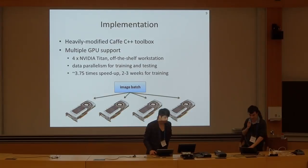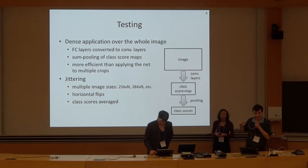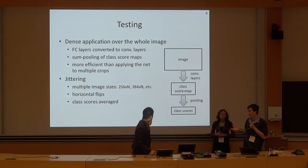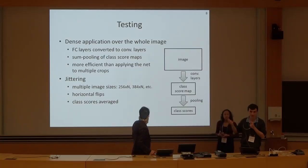At test time, we don't actually use any crops — we just densely apply the network over the image, similar to what OverFeat did last year. It's an open question how much the results would change using crops, say 144 crops. It is entirely possible we could get better performance that way. But because the dense approach is more efficient and practical than recomputing the network from scratch multiple times, we decided to use this more practical dense approach.